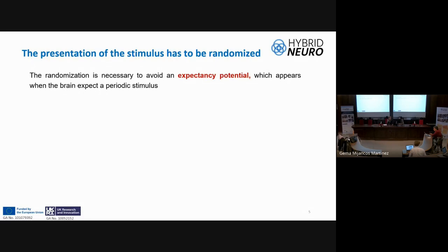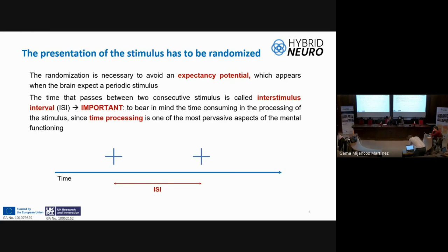It is important that stimulus presentation be randomized to avoid participant anticipation and expectancy potentials. The time between two consecutive stimuli is called the inter-stimulus interval, and it is necessary to allow enough time for processing to avoid overlapping two stimuli so that each can be analyzed clearly.